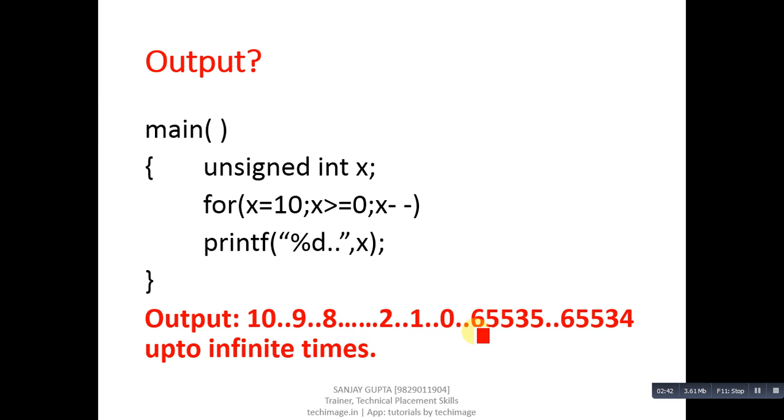Why so? Because X is unsigned, so in case of unsigned we cannot store any negative value. It means range will be 0 to 65535. So loop is started from 10, condition is true - 10 is greater than or equal to 0, so first 10 is printed, then X becomes 9, again condition is true so 9 is printed. So till 0 this condition will be true, so from 10 to 0 all the digits will be printed.